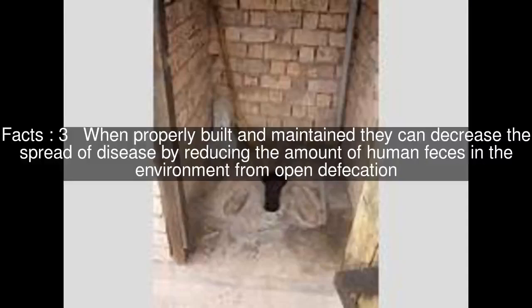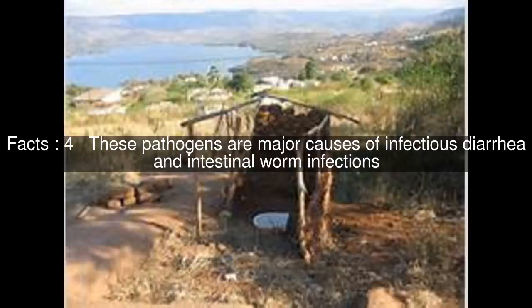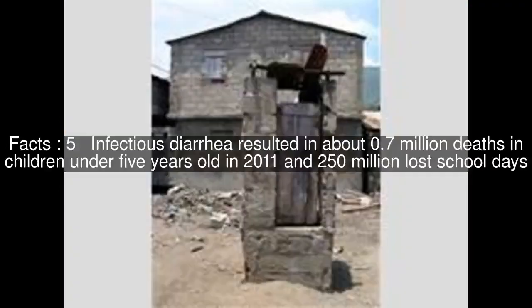When properly built and maintained, they can decrease the spread of disease by reducing the amount of human feces in the environment from open defecation. These pathogens are major causes of infectious diarrhea and intestinal worm infections. Infectious diarrhea resulted in about 0.7 million deaths in children under 5 years old in 2011 and 250 million lost school days.